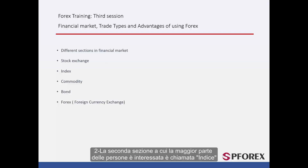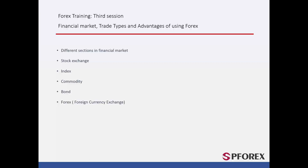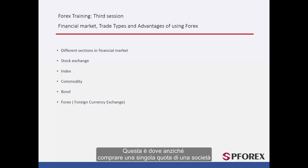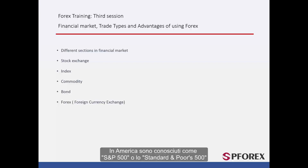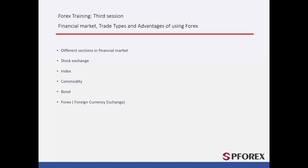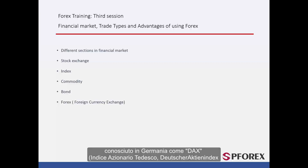The second section, which most people show interest in, is called an index. This is where, instead of buying a single share of a company, many people intend to buy an index of that share. These can be traded internationally. In America, these are known as S&P 500, or the Standard & Poor's 500, and in Germany they are known as DAX.